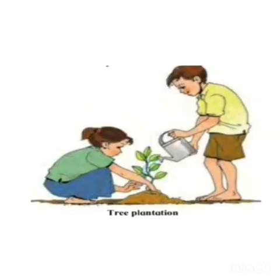Planting trees, especially indigenous or local varieties like banyan, peepal, neem, waranj, etc., and caring for them. These trees adapt easily to the local environment and help in enhancing biodiversity. We should also avoid fuels that cause pollution and instead use fuels such as LPG or CNG for vehicles.